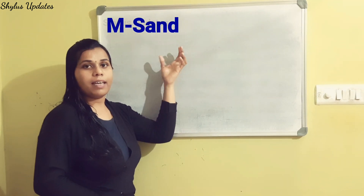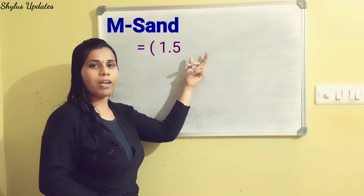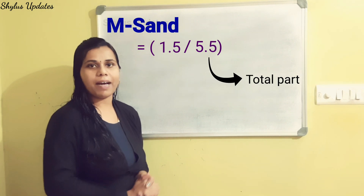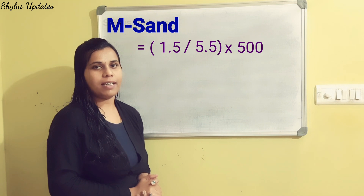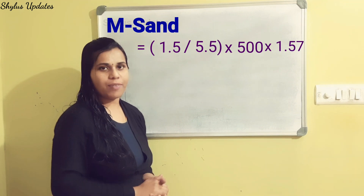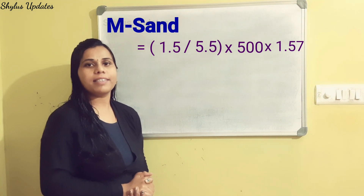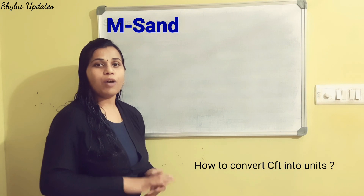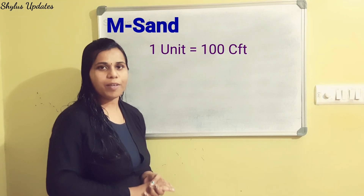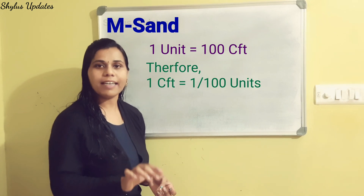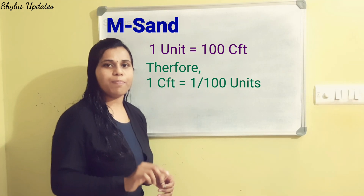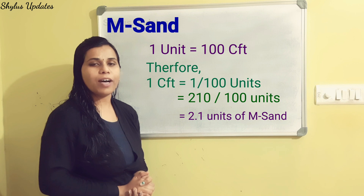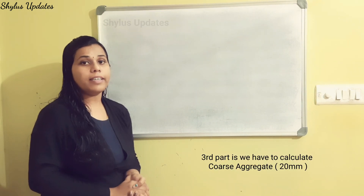Next we calculate M-Sand, which is the fine aggregate, measured in units. M-Sand = (1.5 ÷ 5.5) × 500 × 1.57. When we multiply this, we get 210 cubic feet. To convert to units: 1 unit = 100 cubic feet, so 210 ÷ 100 = 2.1 units. Therefore, the answer is 2.1 units of M-Sand or fine aggregate.